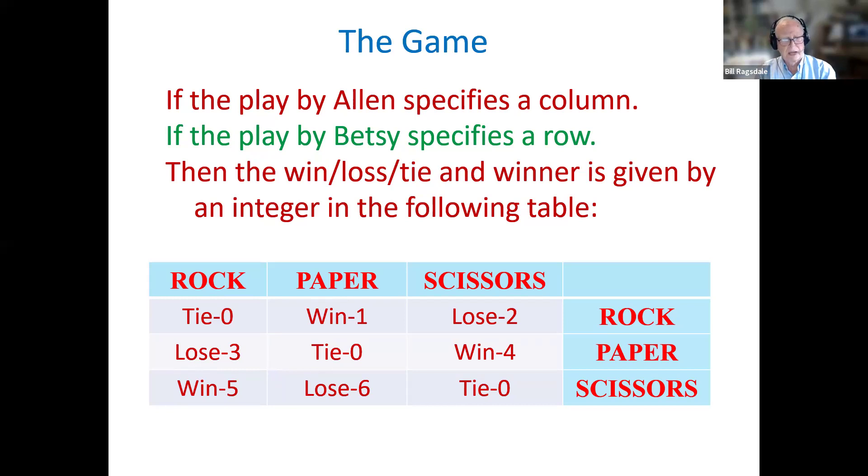So you notice on the major diagonal, there are ties and three positions between rock, rock, paper, paper, and scissors, scissors.